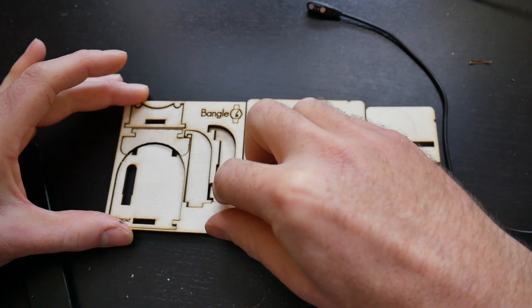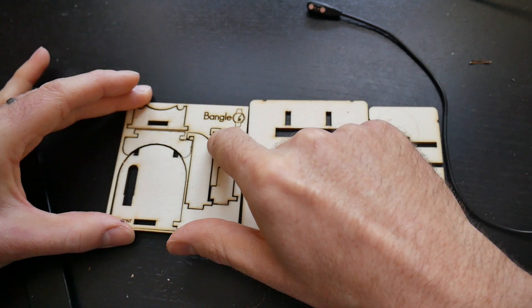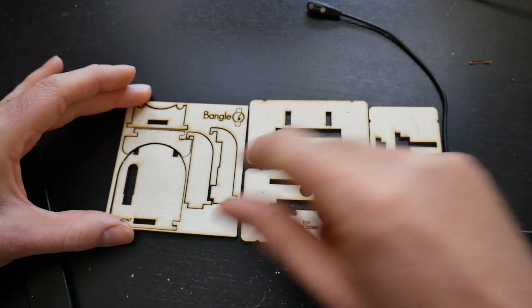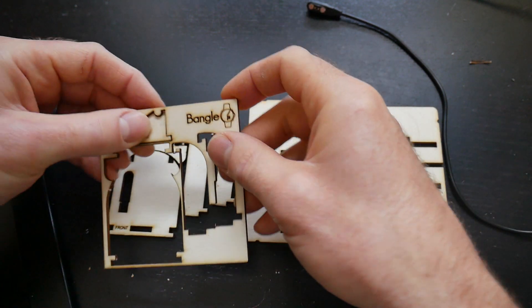So first step, break all the parts out of the panel. You just need to be a little bit careful around here and here as these bits can be a bit delicate, but most things should come out really easily.